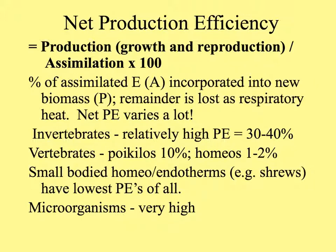Net production efficiency (NPE) equals production divided by assimilation times 100. This is the percent of assimilated energy incorporated into new biomass; the remainder is lost as respiratory heat. NPE varies a lot: invertebrates such as insects and aquatic invertebrates have relatively high production efficiency of 30% to 40%. Vertebrates are much lower, generally 10% or less, and NPE is greater for poikilotherms than homeotherms. Small-bodied homeotherms or endotherms have the lowest production efficiencies of all, because they expend so much energy, whereas microorganisms have very high production efficiency.